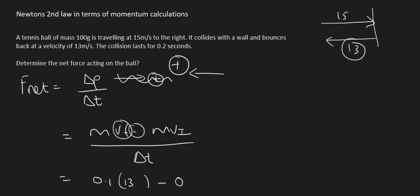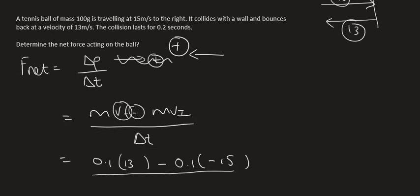Then the mass is still going to be 0.1 and your initial velocity is 15. But because it's 15 to the right you have to put a negative. Why? Because we chose right as, I mean we chose left as positive. We then divide by time.